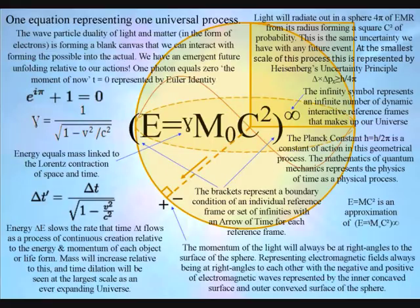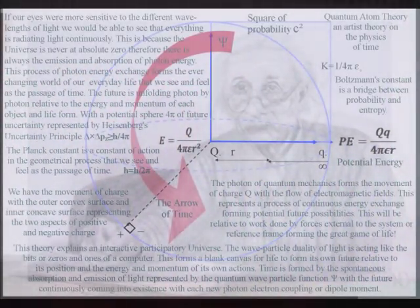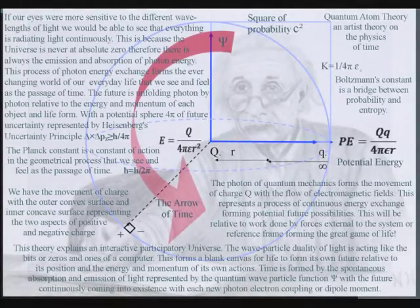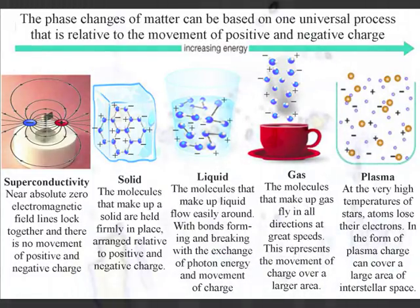Light is a wave and only has particle characteristics when it interacts with the electron probability cloud that surrounds the nucleus of an atom. The wave particle duality of light and matter in the form of electrons is forming a blank canvas that we can interact with, forming the possible into the actual. In such a theory, the photon is the evolutionary driving force of everything.